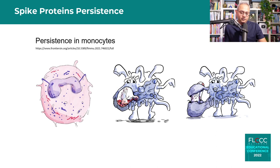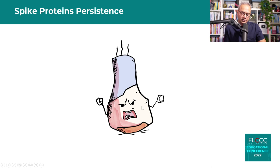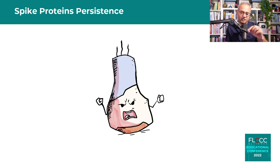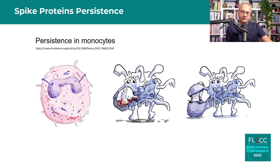First: the persistence of spike proteins. There are studies showing that the S1 part of the spike protein — which contains the receptor binding domain (RBD) and receptor binding motif — is present within monocytes. This S1 part causes monocytes to become dysregulated, continuing to produce inflammatory molecules. The spike actually binds with the ACE2 enzyme via the receptor binding domain.